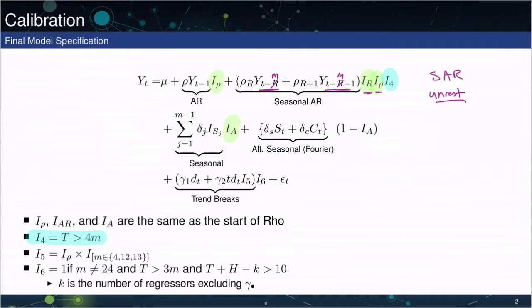Moving along, we see we have seasonal dummies as long as I_A is greater than 0. So in other words, as long as we found evidence of seasonality in the very beginning, we're going to include seasonal dummies. If we don't find evidence of seasonal dummies in the beginning, so in other words, if I_A is 0, then we're going to include this alternative form of seasonality, which is just to capture a very mild amount of seasonality if it's necessary. And this is simply going to use the Fourier terms that we defined on the previous slide.